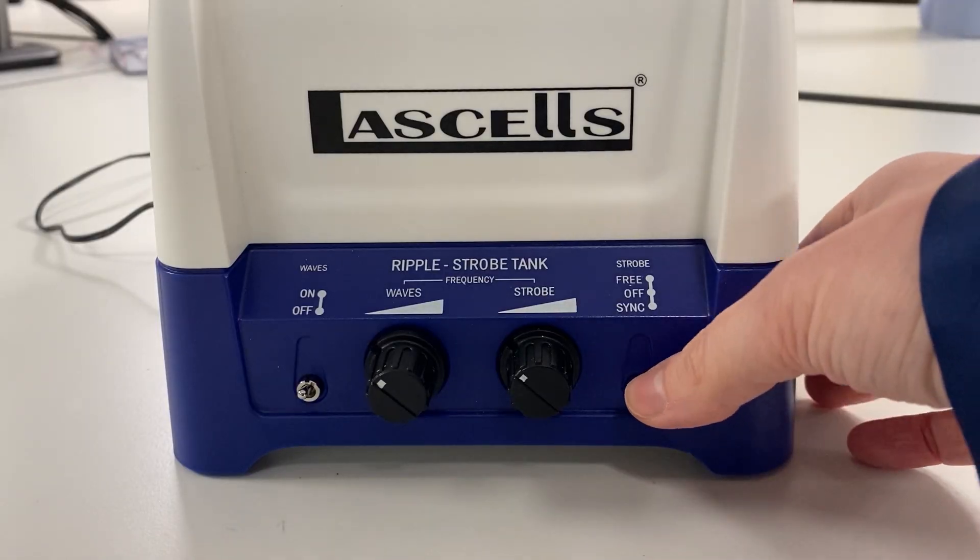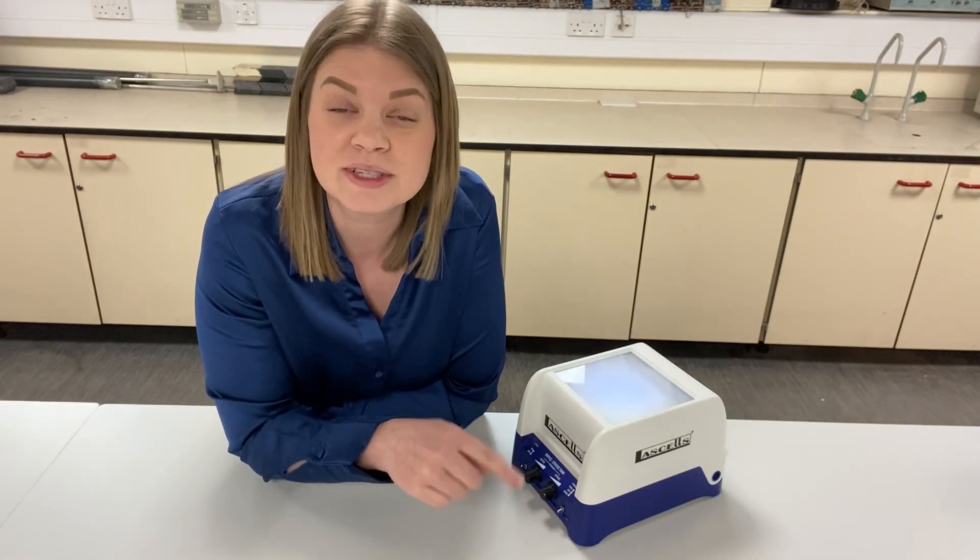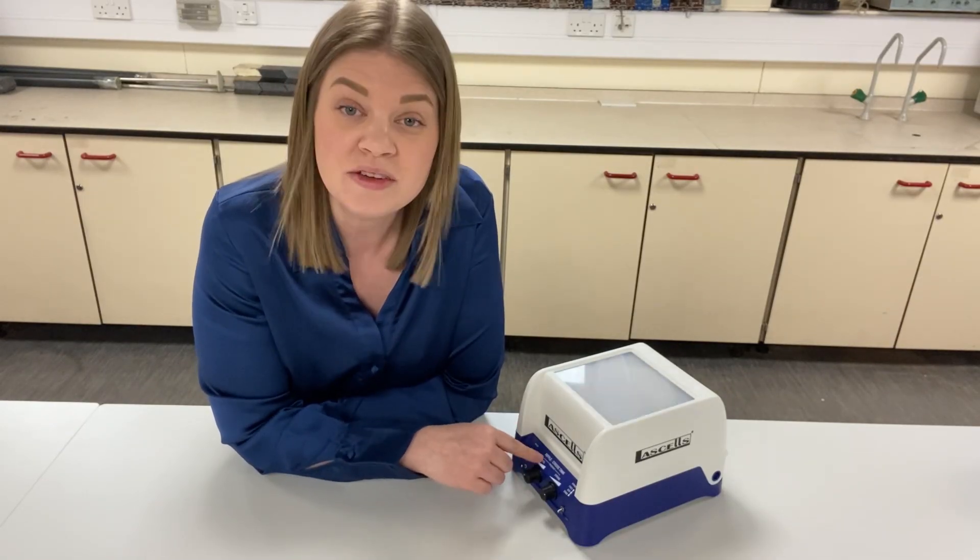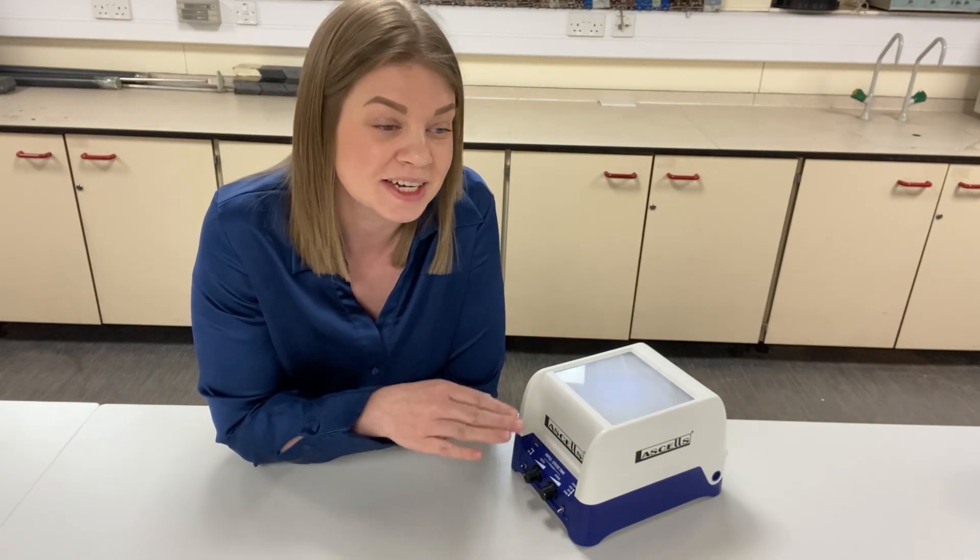So we close the lid, we turn the waves to on and that turns the vibration generator on, and then we turn the strobe on to sync and that matches the light frequency to the wave frequency. Now to get a sensible pattern all we need to do is adjust the wave frequency until we see some nice stripes.